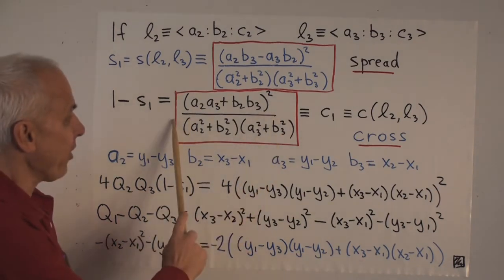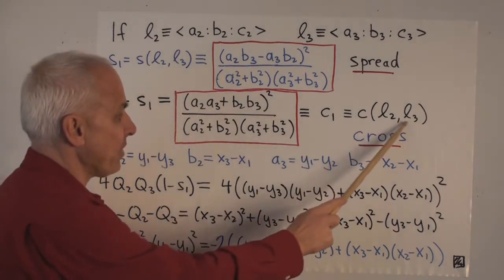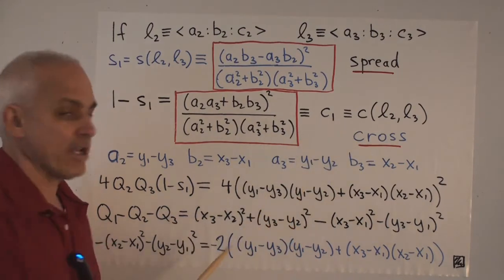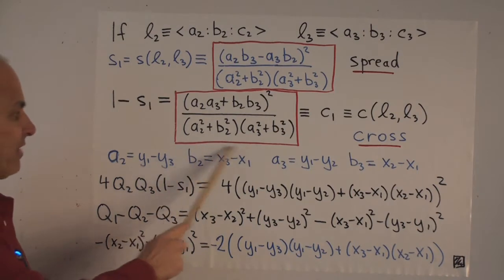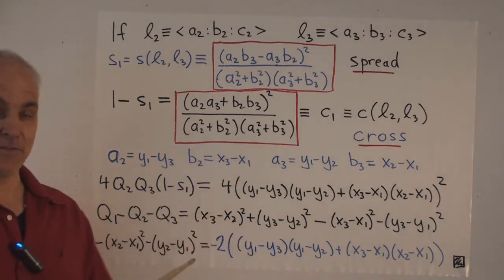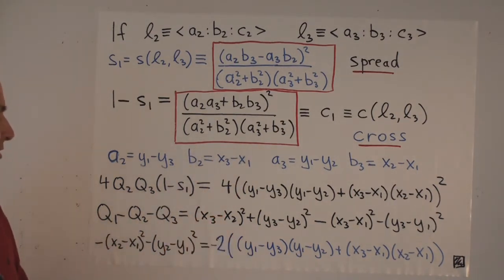Now this quantity here, which depends also on the lines L2, L3, is called the cross between those two lines and denoted by C. That's what's really involved in the right-hand side of the cross law, which is why it's called the cross law.